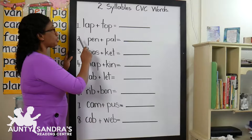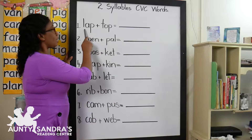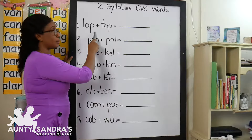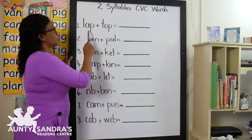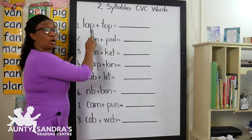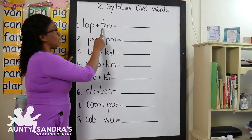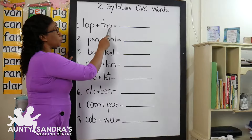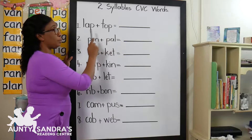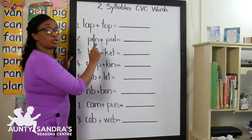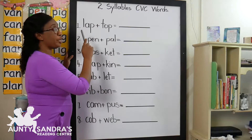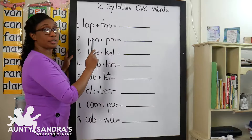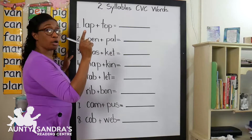So the first syllable is L-A-P, Lap. This part is called a syllable. T-O-P, Top. The next part is also called a syllable. So we are going to join the two syllables together to make it into one word.